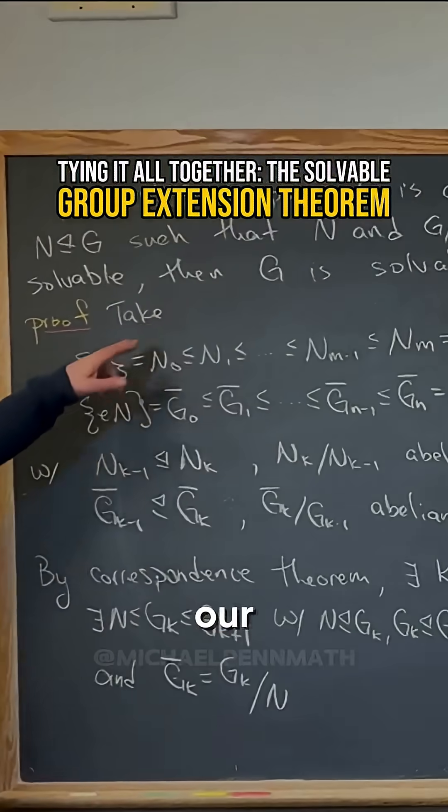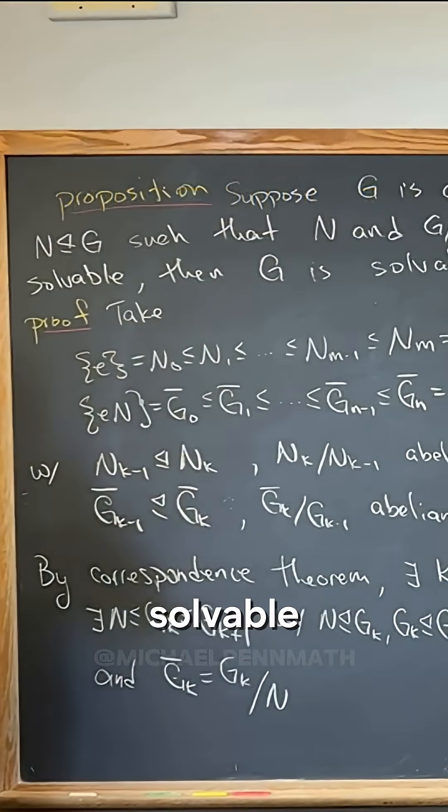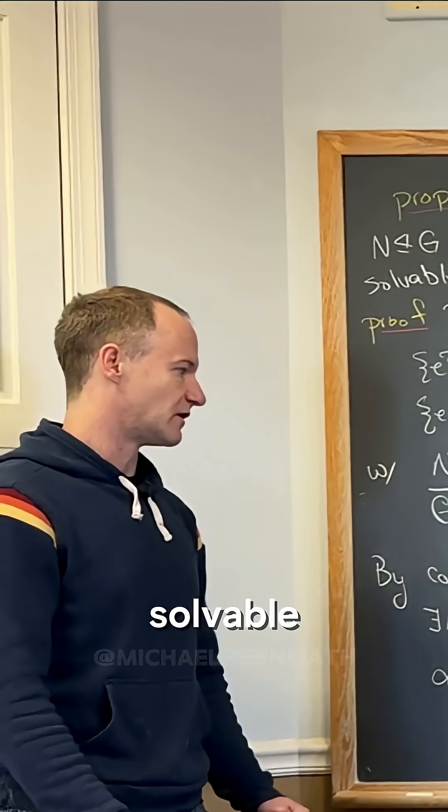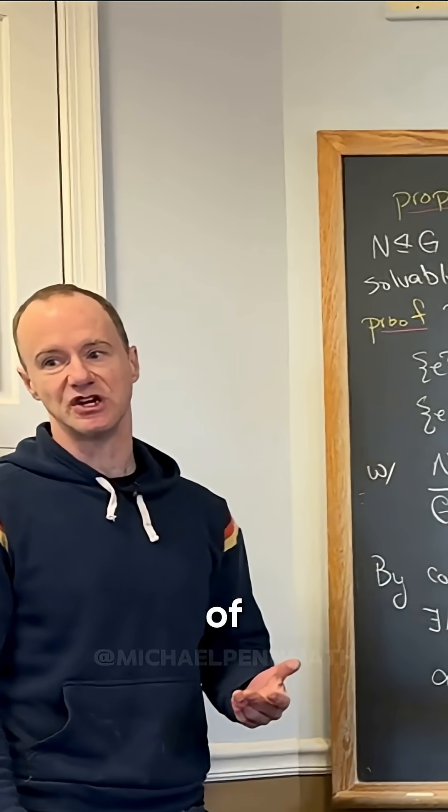Why did we do that? Because our goal in the end is for G to be solvable. Since we want G to be solvable, we need to start building some subgroups of G.